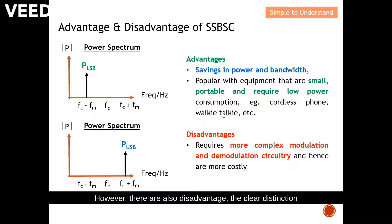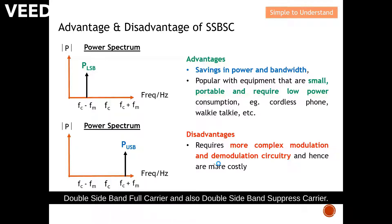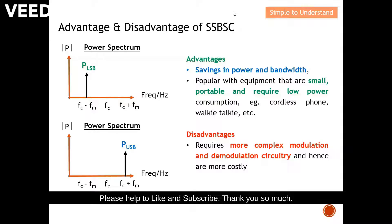However, the disadvantage of SSB-SC is the same as DSB-SC — it requires more complex modulation and demodulation circuitry, and hence it is more costly compared to both DSB-FC and DSB-SC. With this, I'd like to end my discussion. Please don't forget to like and subscribe. Thank you so much.